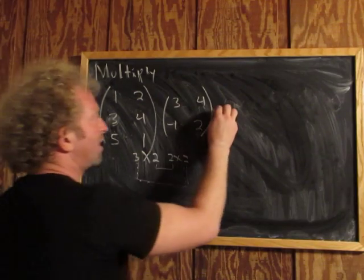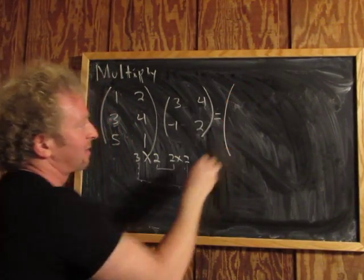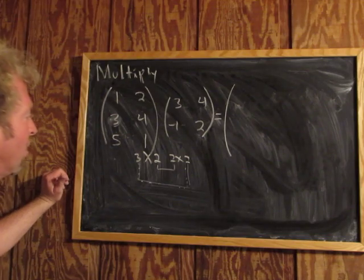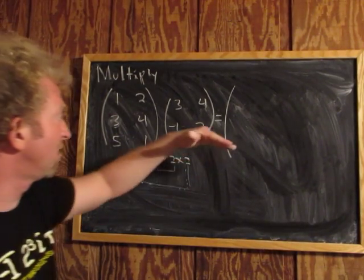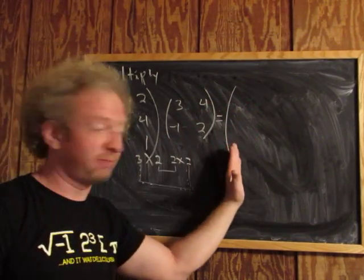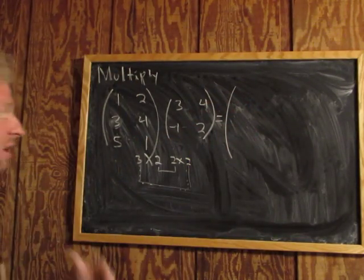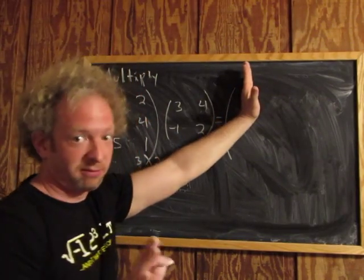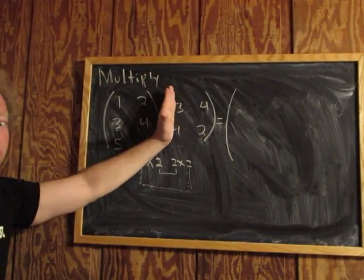Alright, so we'll write the initial answer here. To find the result — which is 3 by 2 — it's going to be 3 rows and 2 columns. To find the entry in the first row, first column, you use the first row and first column.